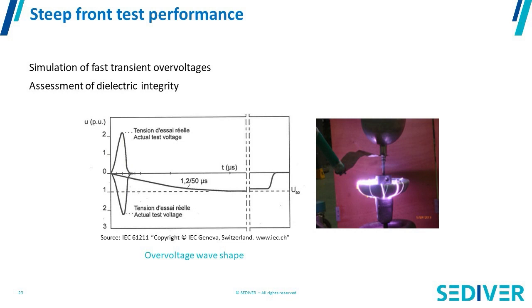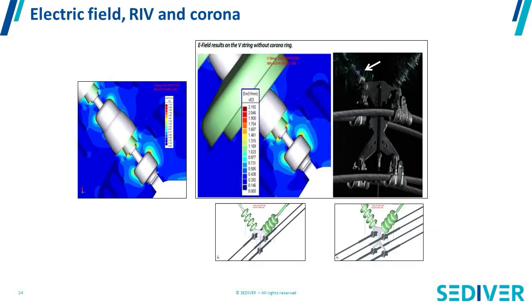The sketch here shows the difference between a lightning impulse and a steep front wave. You can see the steep front wave as a huge, quick bump on the timeline, and a much slower voltage increase for the lightning impulse. So the steep front wave is really much faster than the lightning impulse.